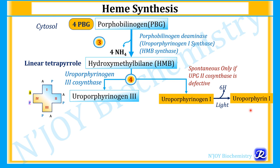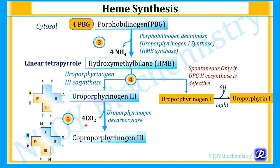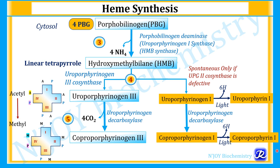Step 5 is a decarboxylation reaction in the cytosol: four CO₂ molecules are released, catalyzed by uroporphyrinogen decarboxylase, forming coproporphyrinogen 3. In its structure, the acetyl groups are replaced by methyl groups: MP, MP, MP and PM — asymmetrical distribution. Uroporphyrinogen 1 can also be converted to coproporphyrinogen 1 and then coproporphyrin 1 by uroporphyrinogen decarboxylase.